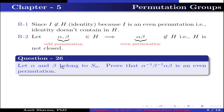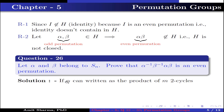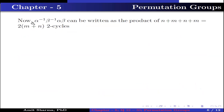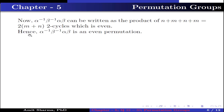Question number 26. If alpha and beta belong to SN, prove that alpha inverse beta inverse alpha beta is an even permutation. If alpha can be written as a product of M 2-cycles and beta as a product of N 2-cycles, then alpha inverse and beta inverse can also be written as products of M and N 2-cycles respectively. Now, alpha inverse beta inverse alpha beta can be written as a product of N + M + N + M = 2(M + N) 2-cycles, which is even in number. Hence, alpha inverse beta inverse alpha beta is an even permutation.